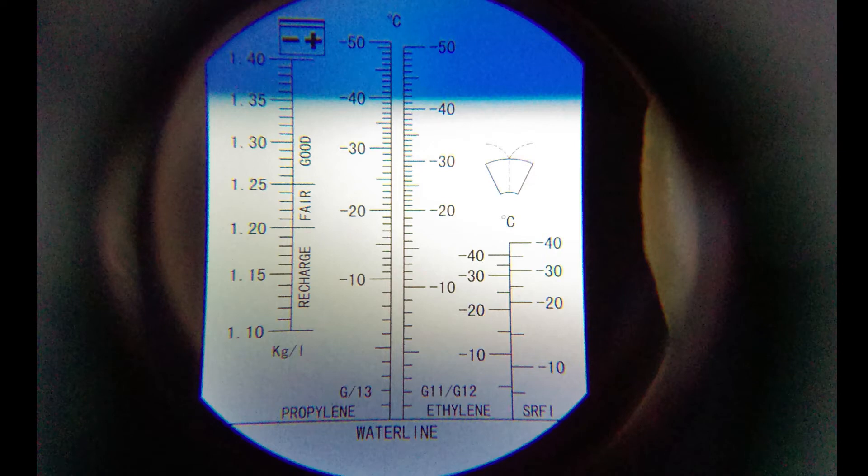Note there are several scales, but what's relevant is the right side of the scale in the center. It's marked ethylene. This center scale is for engine coolant, and my coolant is ethylene based rather than propylene.